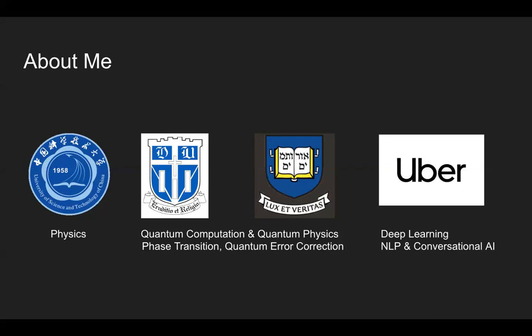A little background about myself: I got my undergraduate degree in physics from the University of Science and Technology of China, and I did my PhD also in physics, specialized in quantum physics and quantum computation, from Duke University. I also did postdoc research at Yale University working on quantum computation and quantum error correction. Three years ago I decided to move to machine learning and AI, and started working at Uber on deep learning NLP applications. More recently I got involved in our conversational AI effort, and right now I'm a tech lead on the conversational AI team.